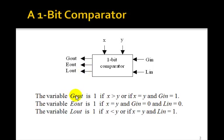Now the variable g out is going to be 1 if x is greater than y, that is, if x is 1 and y is 0. Or if x is equal to y, then g out will be equal to g in.